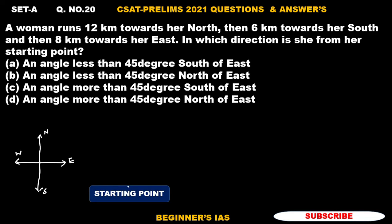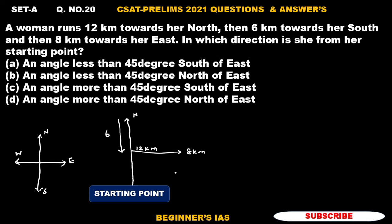I am considering this as the starting point. She runs 12 kilometers towards north. Then after 12 kilometers, she moves towards south — after reaching 6 kilometers she is moving towards her east for 8 kilometers. After reaching 8 kilometers, the question is: in which direction is she from the starting point?